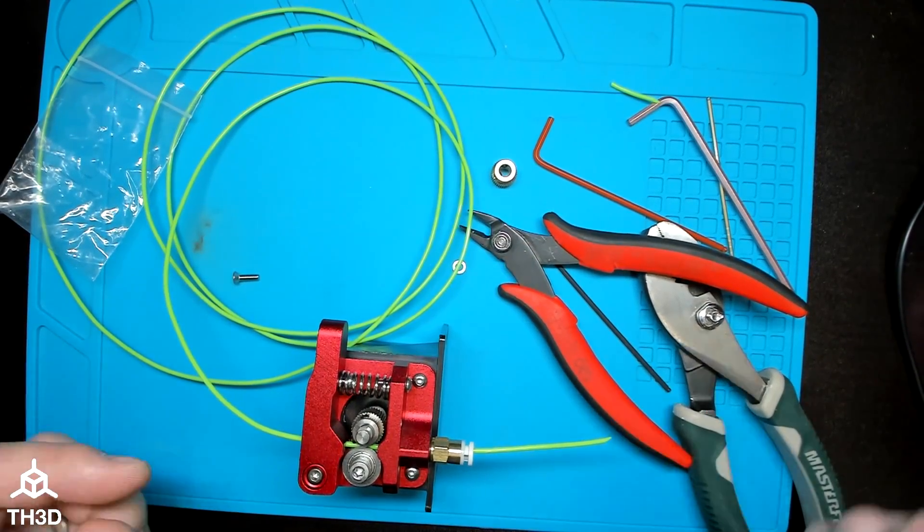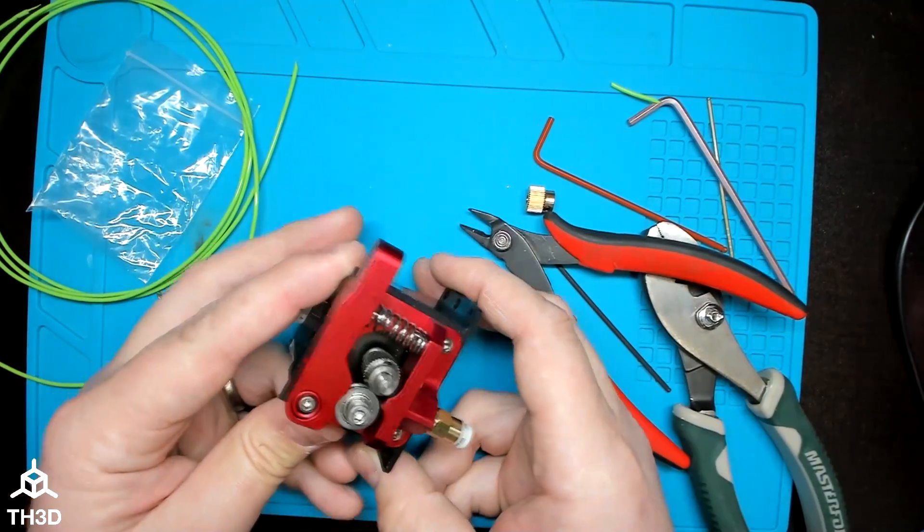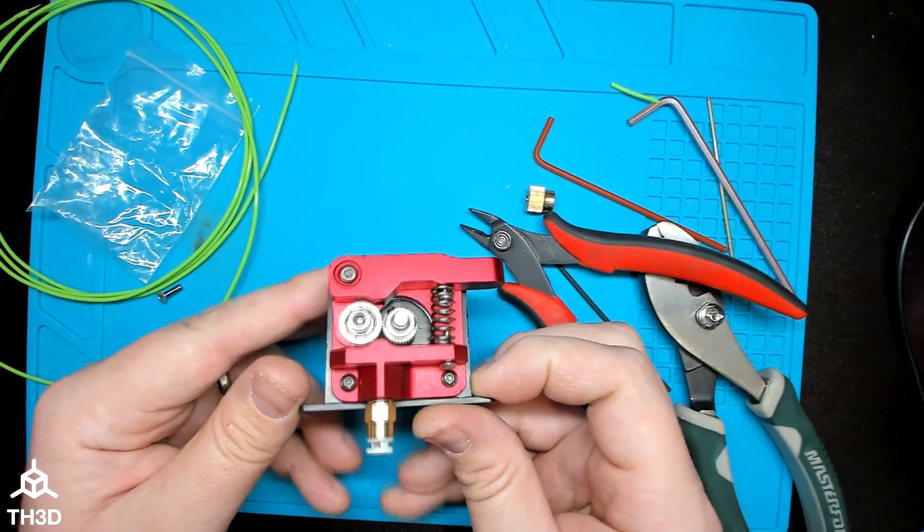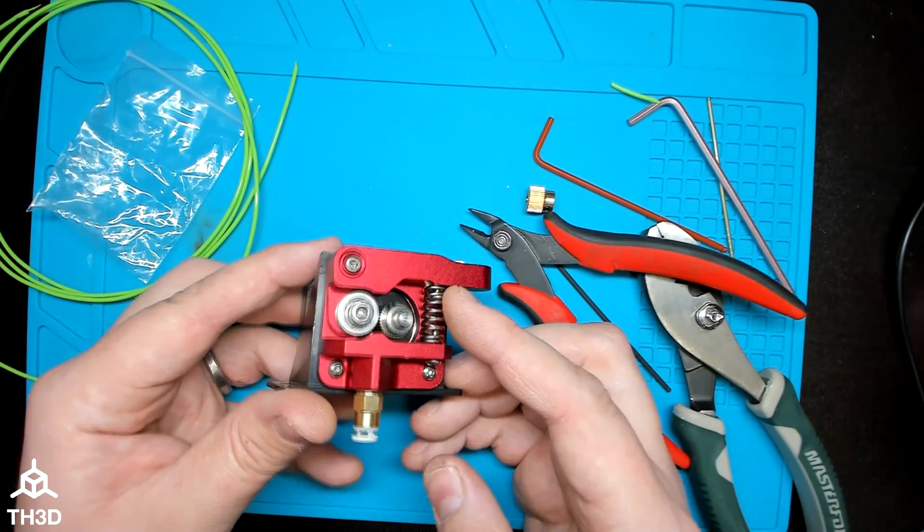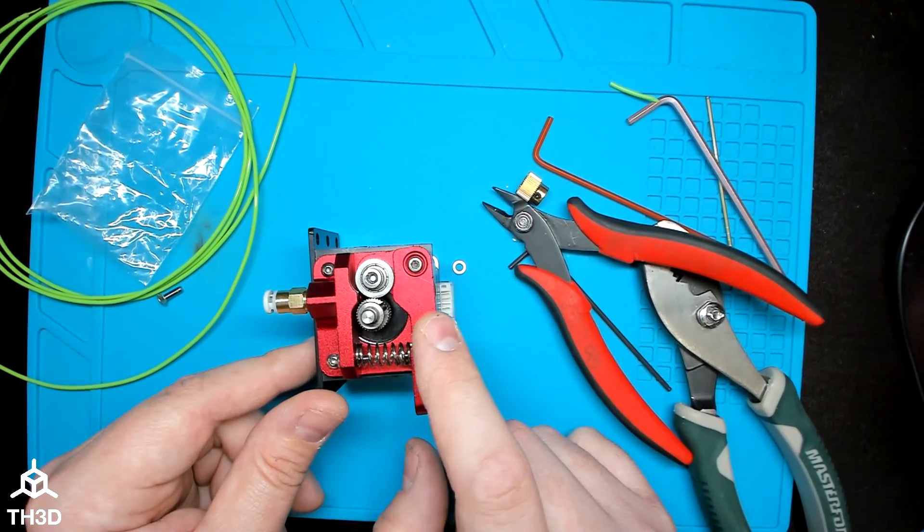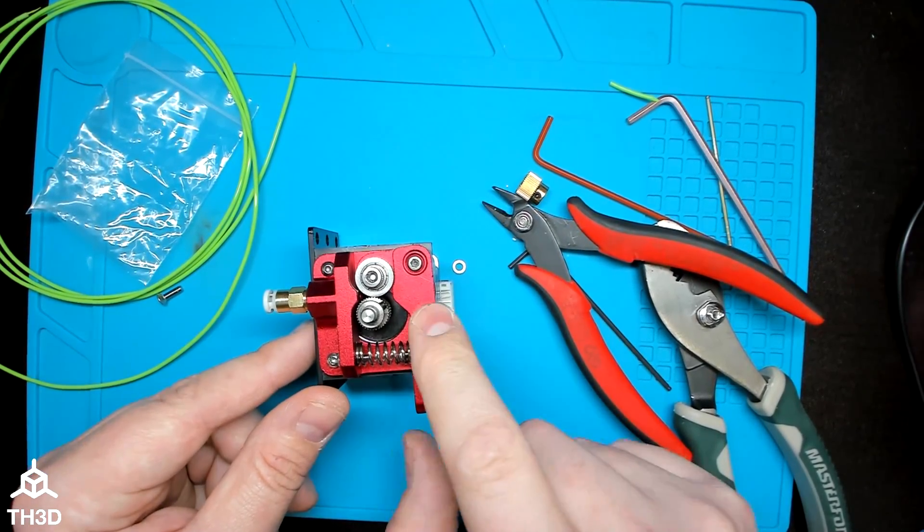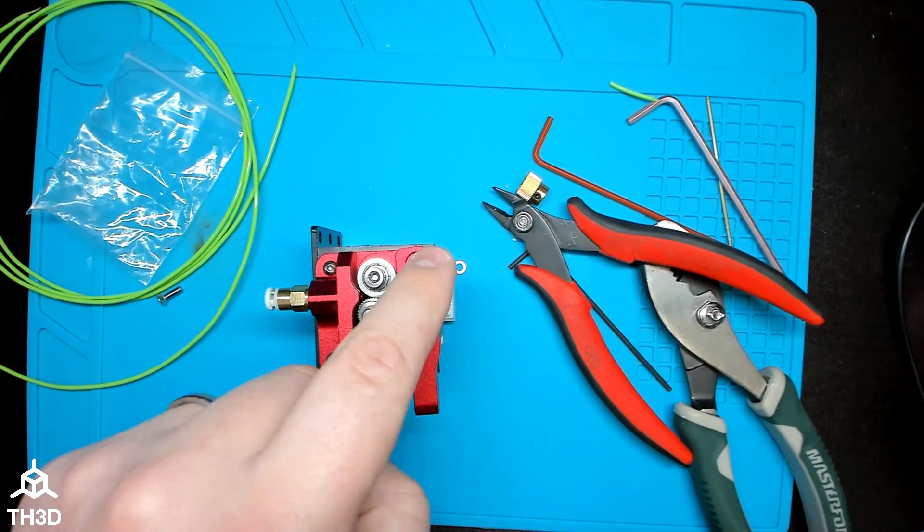When it comes time to unload your filament, press the arm and pull out quickly. That's it. Now we've got a nice all-metal extruder with a beefy gear that's going to last a long time thanks to the material being steel. You won't ever have issues with tension because of this nice beefy spring and the all-metal construction of the arm, unlike some stock printers extruders that use plastic. And that's all there is to it. It's really that simple.